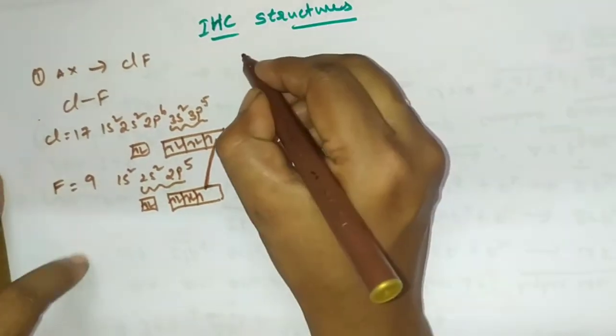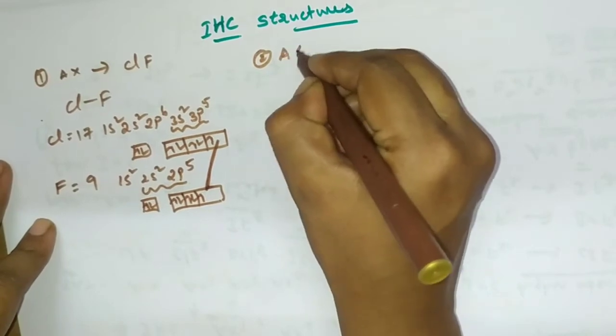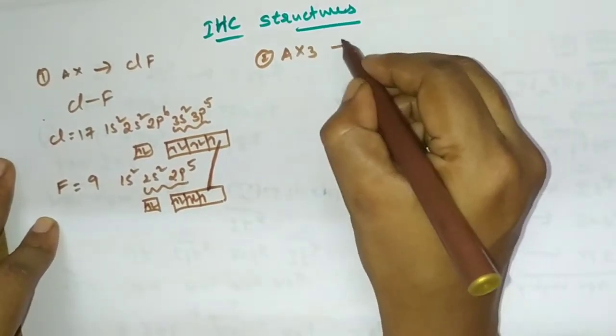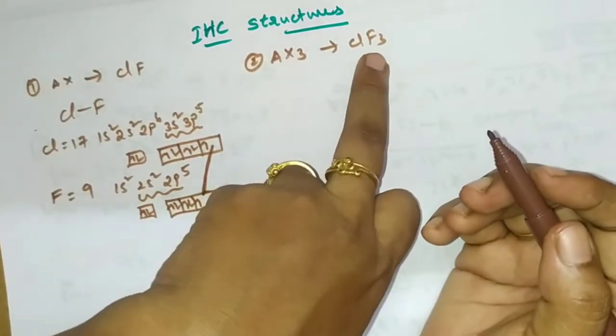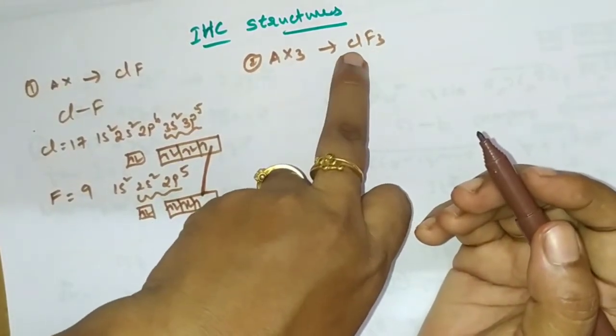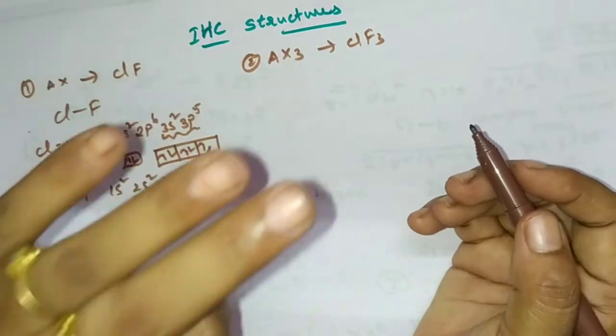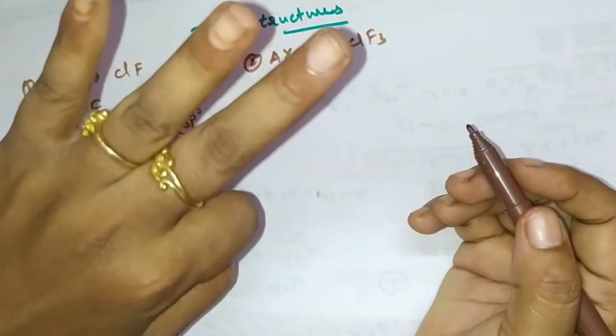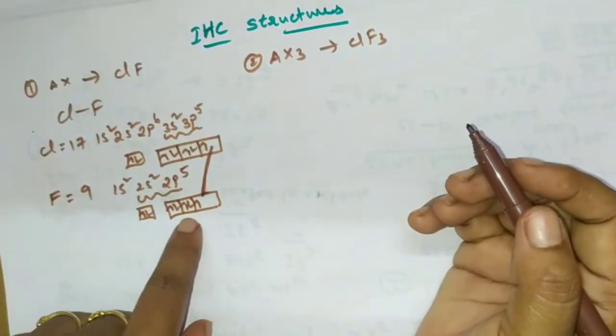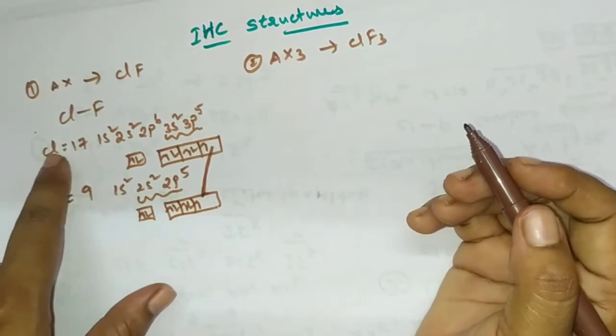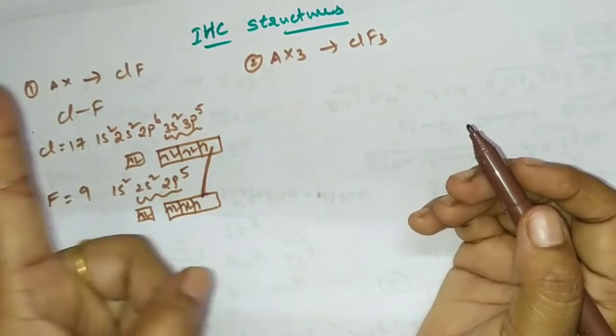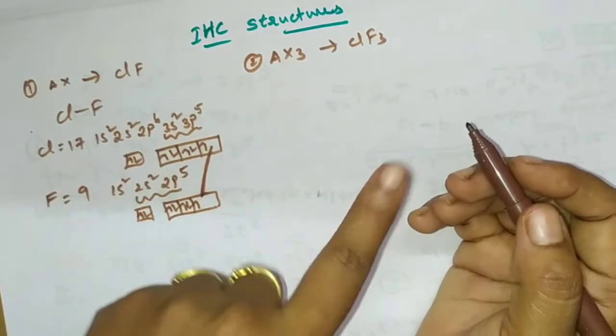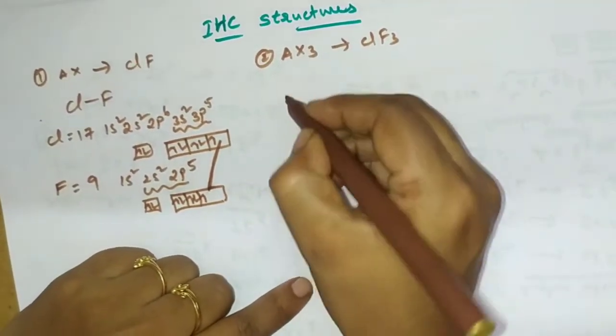Next, second one is AX3 type. Here example is ClF3, that means three fluorines are here, one Cl is here. That means chlorine have to form the three bonds. Just fluorine configuration is like this, but chlorine configuration will be changed. It is in ground state, maybe excited state, that state will be changed.